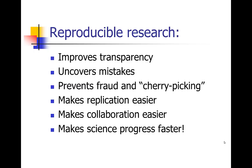Reproducible research certainly has a lot of benefits. It improves transparency, uncovers mistakes such as those in the Duke case, prevents fraud, and prevents cherry-picking — where researchers look at only a particular part of their data and pick out just the data that supports their hypotheses. Reproducible research also makes independent replication easier: if you know exactly how they analyzed the data, an independent group can go on and replicate those results.